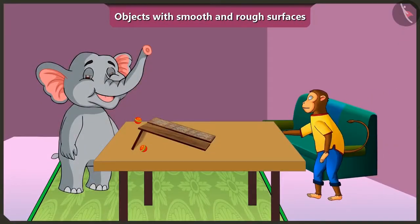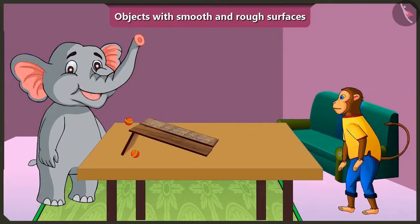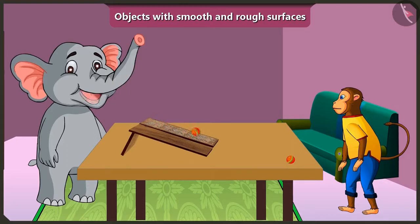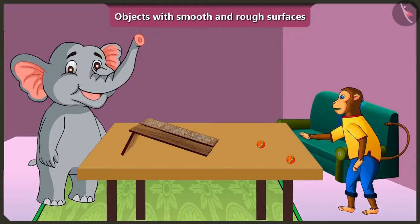Hey Appu, what are you doing here? Look Jaggu, I have two similar balls. When I roll them like this, the ball rolls down faster on this wooden slope, but on this other slope the ball rolls down slowly. Why is it so, Jaggu? Hey Appu, your balls are similar, but the slope of these wooden planks is not the same. I did not quite understand.